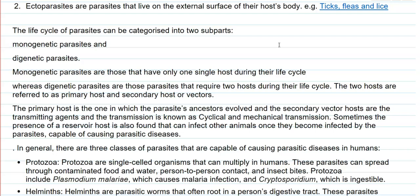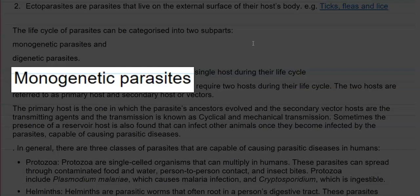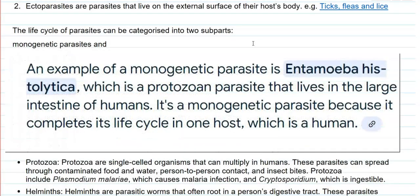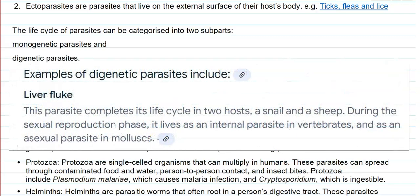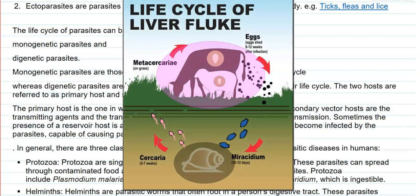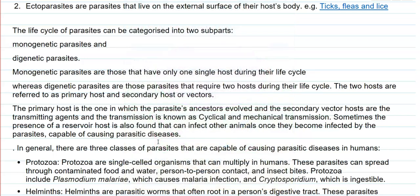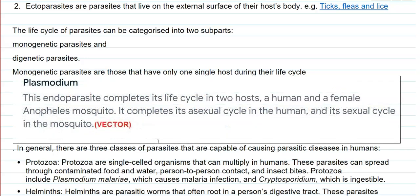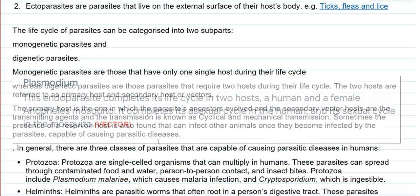The life cycle of parasites can be categorized into two sub-parts: monogenetic parasites and digenetic parasites. Monogenetic parasites are those that have only a single host during their entire life cycle, whereas digenetic parasites require two different hosts during their entire life cycle. The two hosts are commonly referred to as a primary host and a secondary host, and sometimes the secondary host is also referred to as a vector.